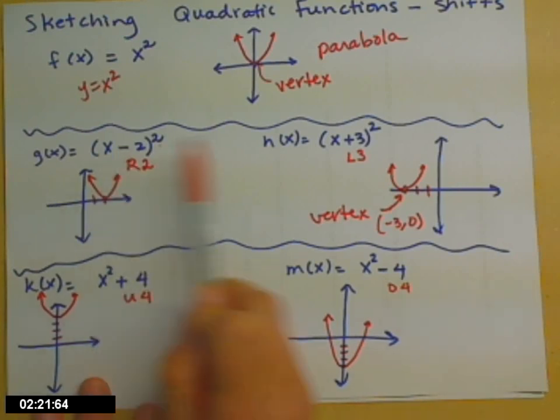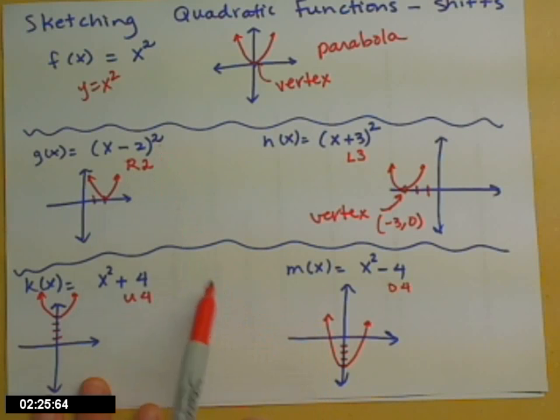So again, inside, before you square it, moves it left or right. Negatives move right, positives move left. Outside of the squaring, moves it up or down. Positive moves up, negative moves down.